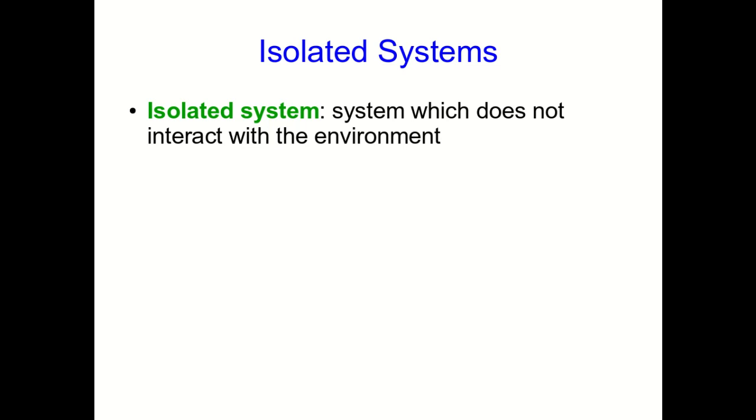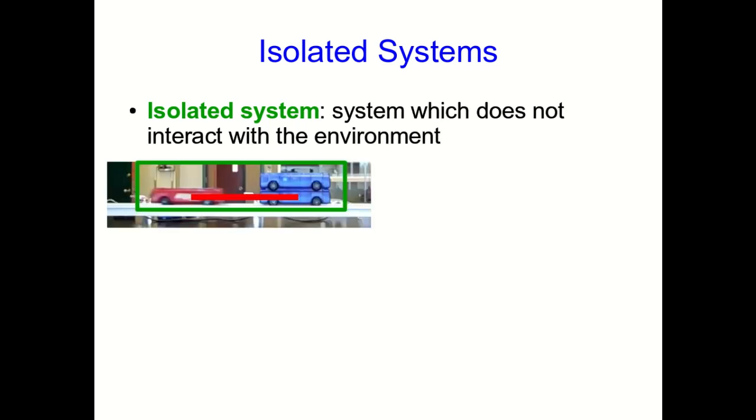Because internal and external interactions do different things to the system, it's important to distinguish between systems that do and don't have external interactions. So the term we use is an isolated system when a system has no external interactions. In other words, when it does not interact with the environment. And so to a reasonable approximation, our carts rolling along the track are a fairly isolated system. So in an isolated system, no momentum enters or leaves the system. It just gets moved around from one object in the system to the other.